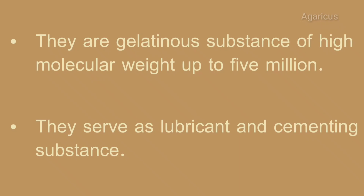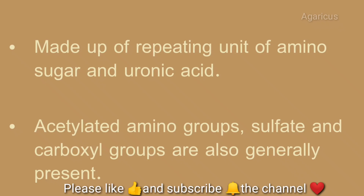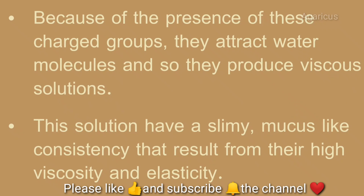They are gelatinous substances of high molecular weight, up to 5 million. They serve as lubricants and cementing substances. Mucopolysaccharides are made up of repeating units of amino sugar and uronic acid. In mucopolysaccharides, acylated amino groups, sulfate, and carboxyl groups are also present.